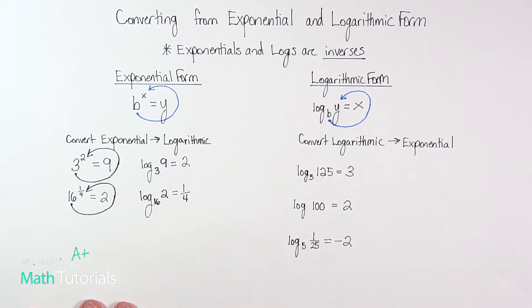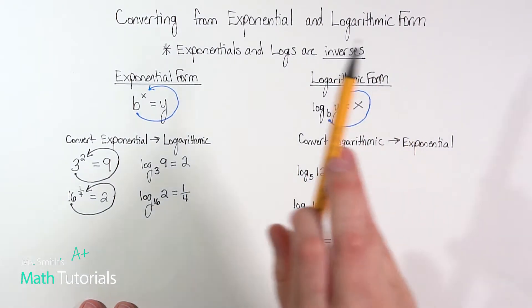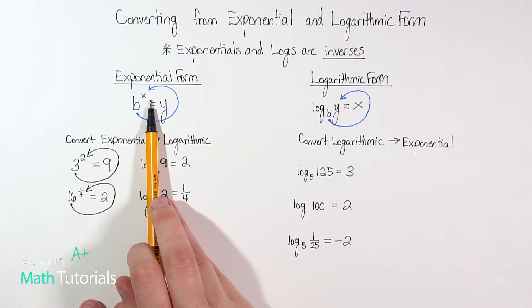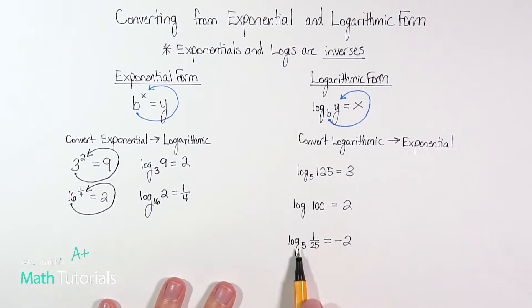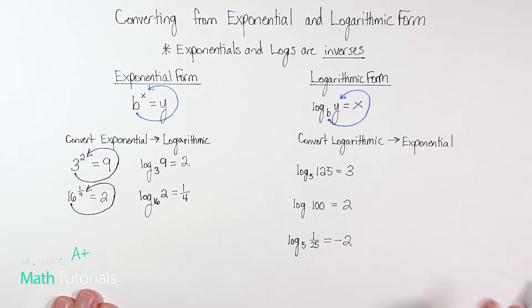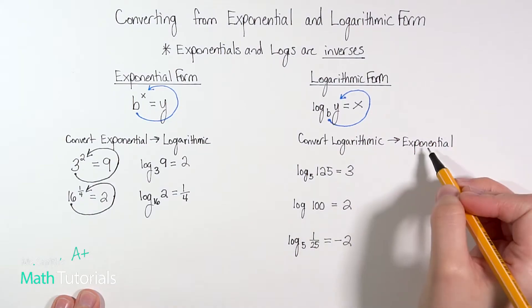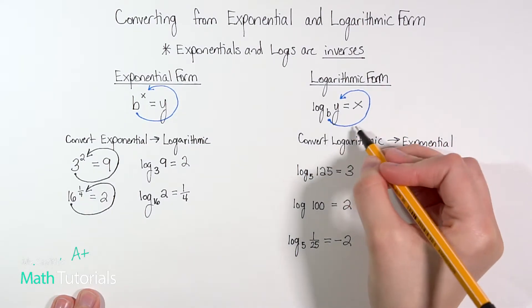So now we're going to do the opposite. We're going to go from log form and convert to exponential form. So when we do that, notice we're starting with log forms. They've got the word log in them. They're pretty easy to identify. But I want to convert them to exponential.